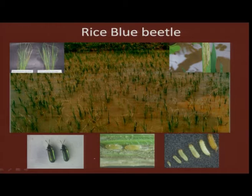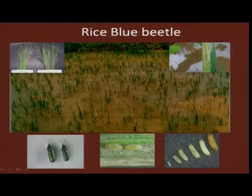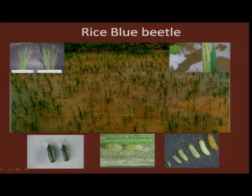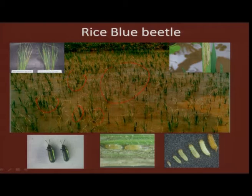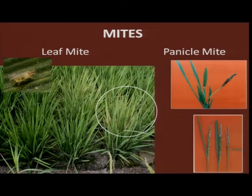Rice blue beetle is again a sporadic pest, and both adults as well as the young ones, the grubs, cause damage. They start feeding from the tip of the paddy leaf, and throughout the paddy field you can see a whitish appearance, as if a bacterial disease has occurred to the paddy crop, and the growth is affected considerably.